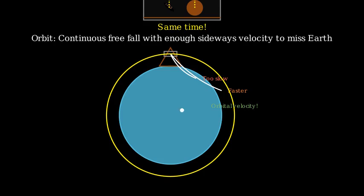Imagine firing a cannon from a tall mountain. If you fire with a small velocity, the cannonball falls to Earth quickly. With more velocity, it travels further before hitting. With enough velocity, the ball falls at the same rate that the Earth curves away beneath it. That's an orbit.